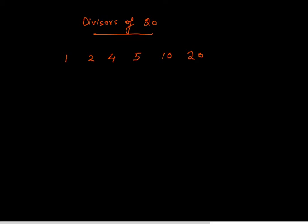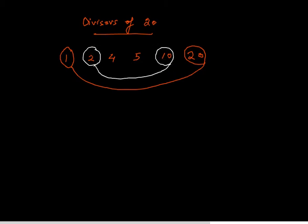Now we want to pair them up, and my claim is that it is always possible to do it. So how would we pair them up? We will pair up 1 with 20, and then let's use a different color, 2 with 10, and let's say green, 4 with 5. So that's how we pair up the divisors of 20, and my claim is that it's always possible. Well, almost always possible to pair the divisors.